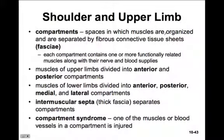The upper limb and lower limb have numerous muscles that serve primarily for movement of the body and manipulation of objects. These muscles are organized into spaces called muscle compartments that are separated by fascia. Each compartment contains one or more functionally related muscles along with their nerve and blood supply. The muscles of the upper limbs are divided into anterior and posterior compartments, whereas the muscles of the lower limbs are divided into anterior, posterior, medial, and lateral compartments.